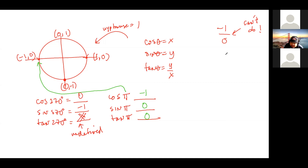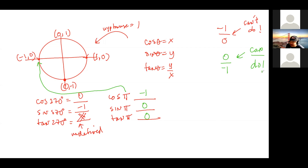What is tangent of pi? You get zero over negative one. We can do that — zero divided by negative one is zero. The top number can be zero, but if the bottom number is ever zero, that's a big no.